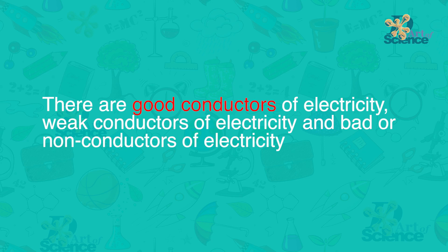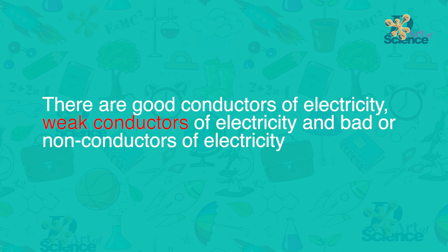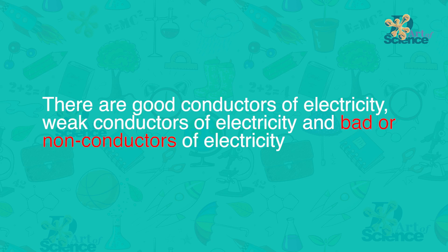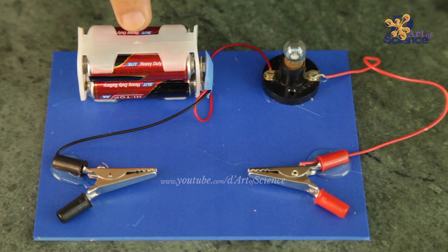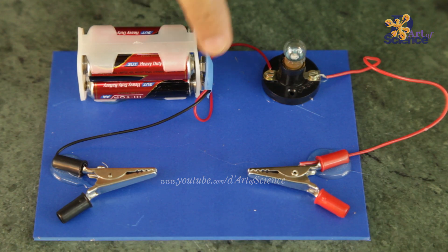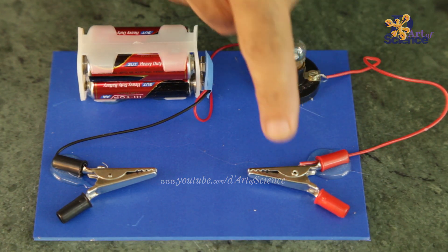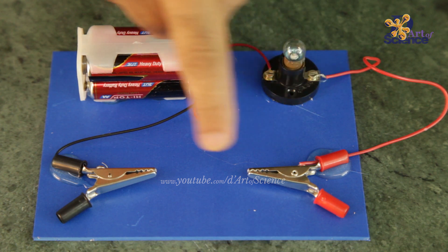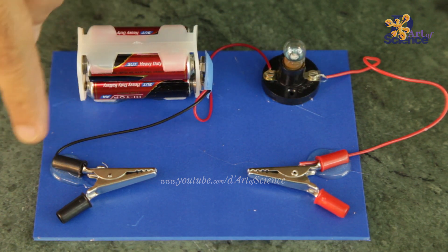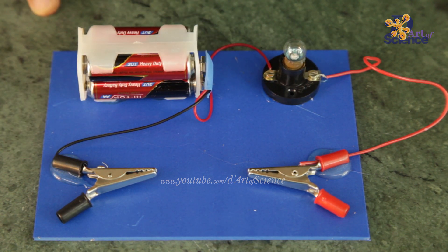In your previous grade you must have learned about electrical conductivity in solids. There are good conductors of electricity, weak conductors of electricity, and bad or non-conductors of electricity. Here we'll see how they behave. In this setup, all the connections are there. Only one part is missing, and that will tell us about the electrical conductivity of these three materials.